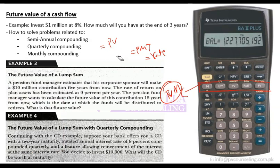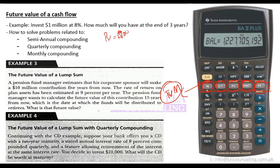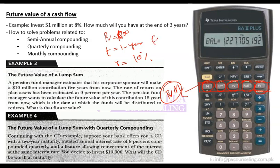It works exactly the same way as Excel. You have a series of buttons for time value of money: N is number of periods, I/Y is interest rate or discount rate, PV is present value, PMT is payment, and FV is future value. So if you are told that present value is $100, the time period is one year, and the interest rate is 10%, you have to calculate future value.